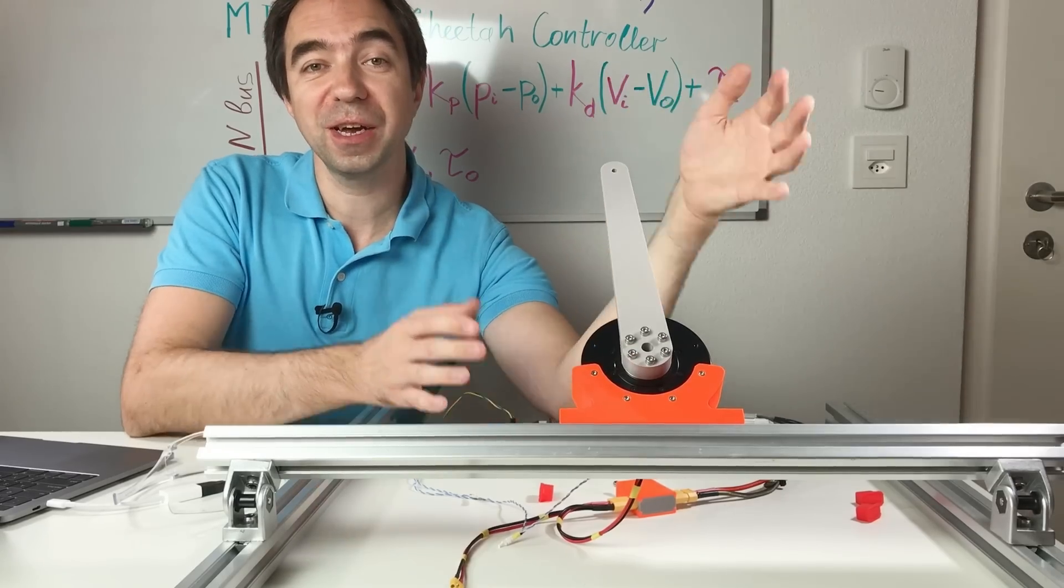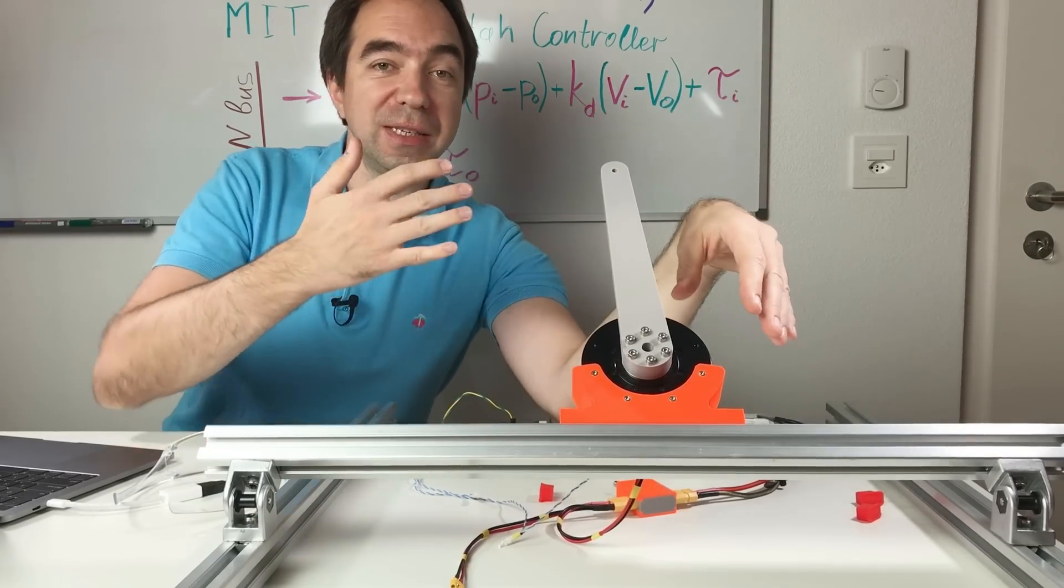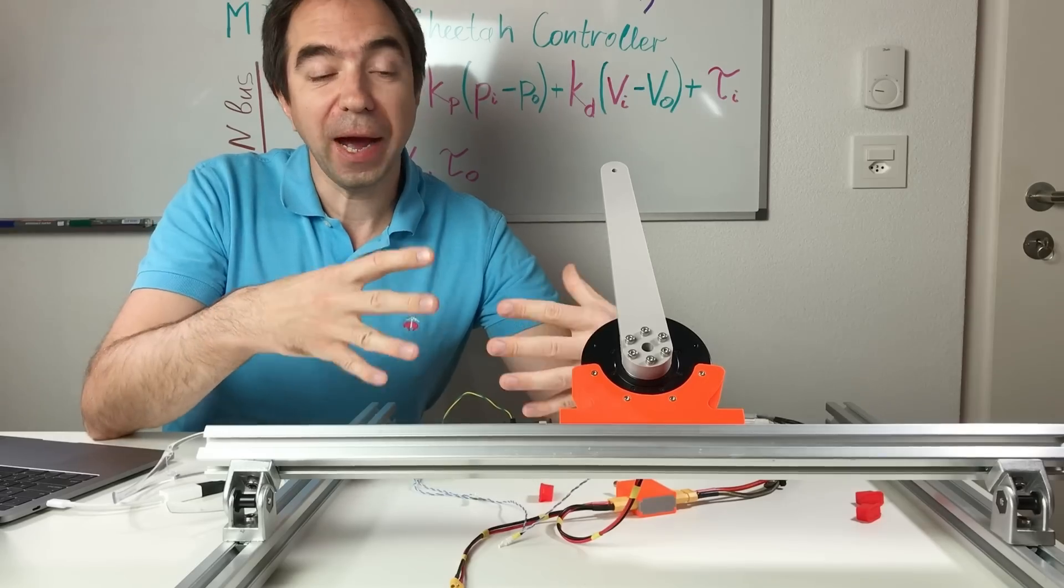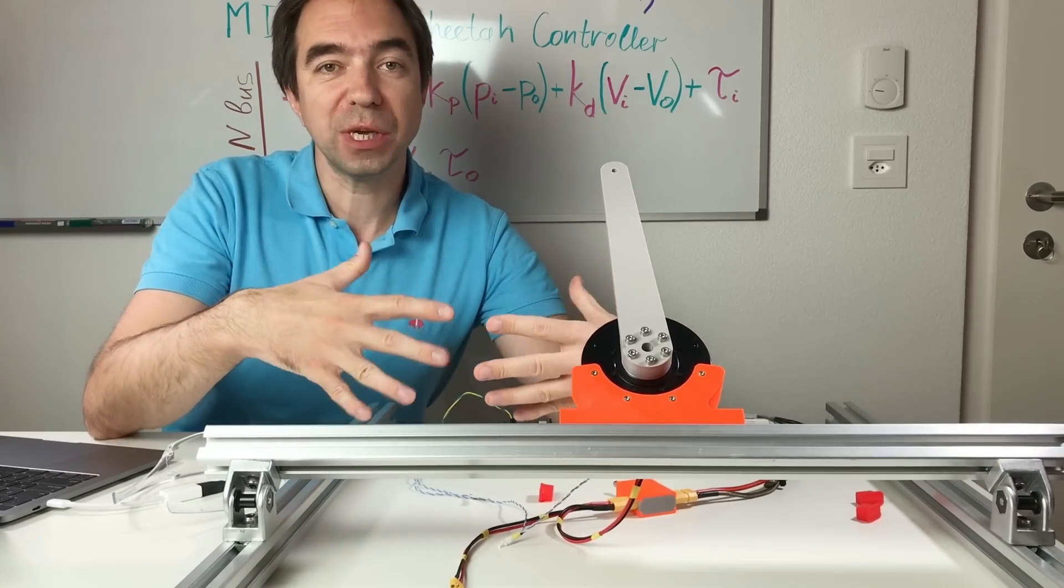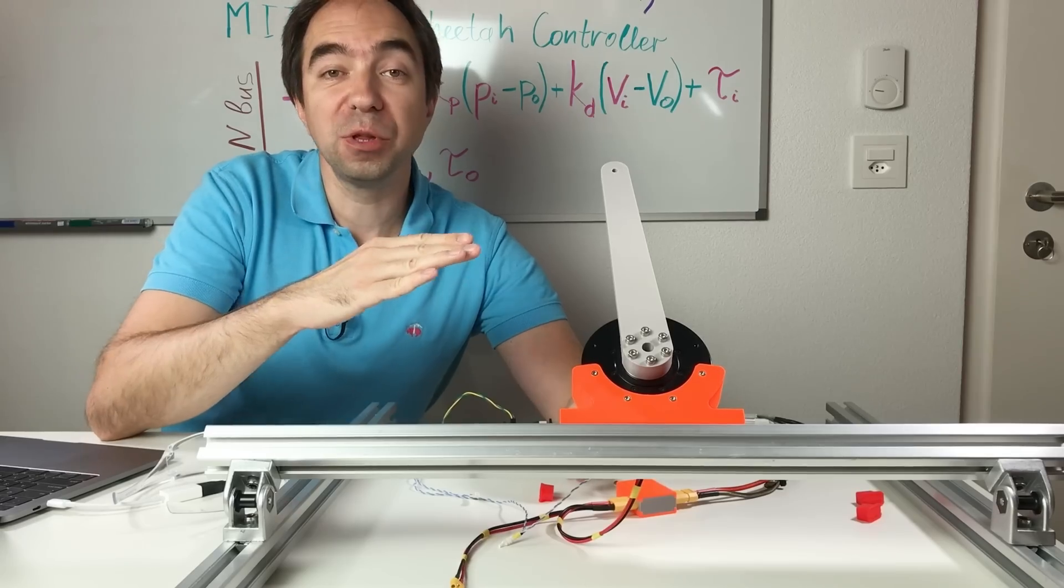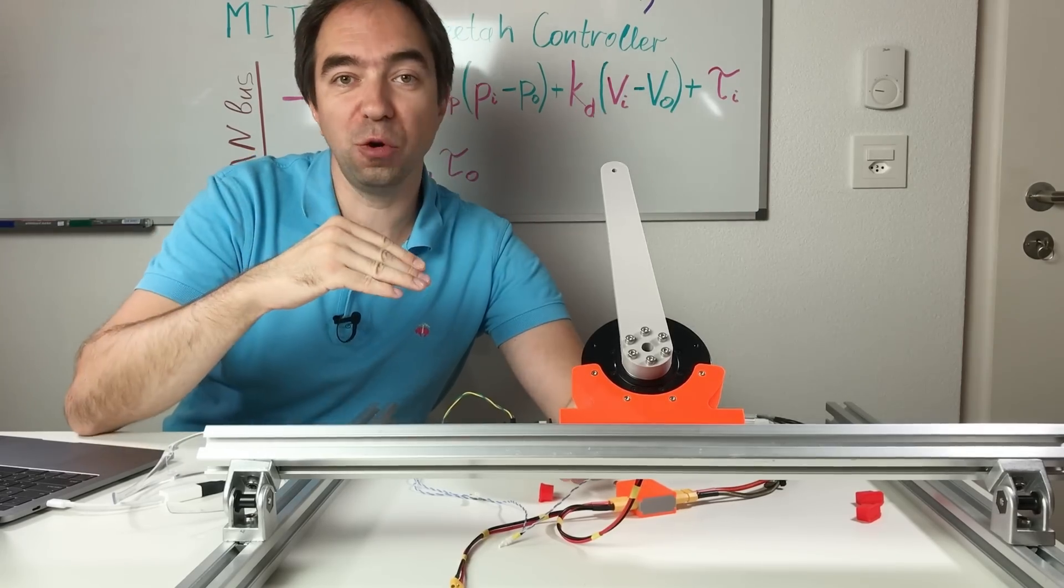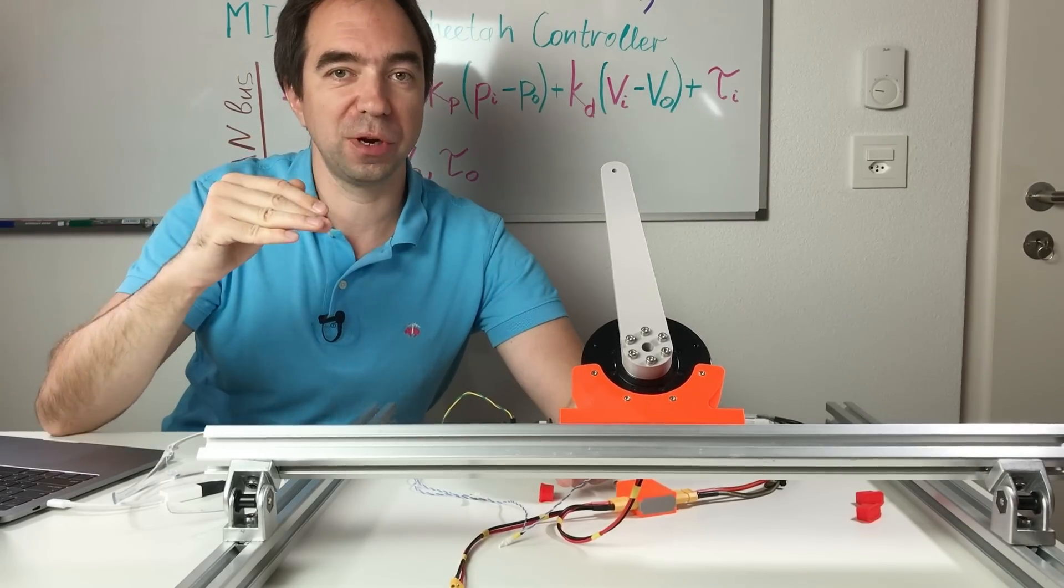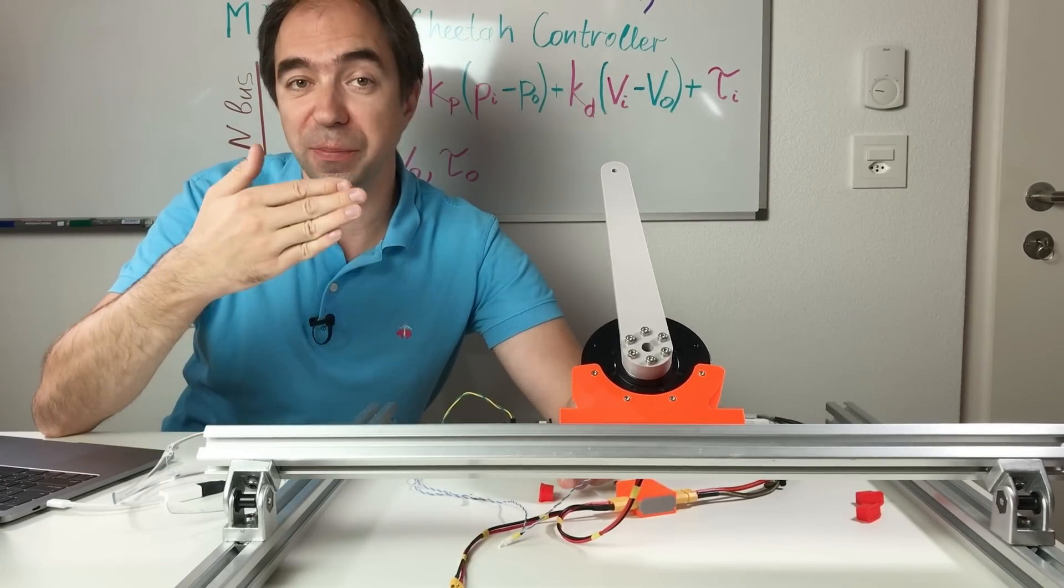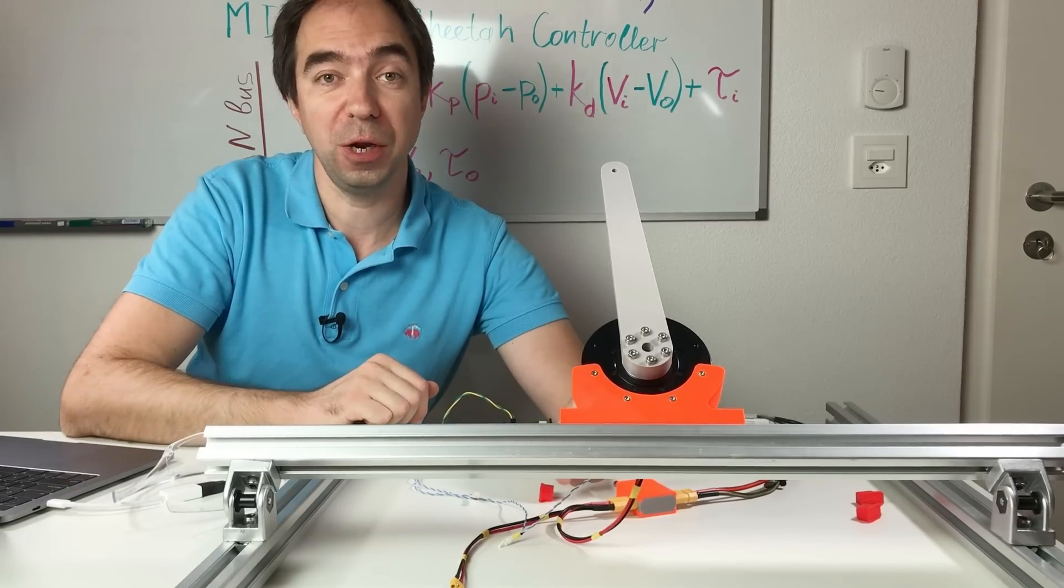As you can see it works kind of like in a collaborative robot where they detect the collisions. So here I added a super simple line, but you can do something more sophisticated. Like for example, you can look not on the absolute value of the torque, but on the step of the torque and detect the collisions like this. It's going to be way better than the collision detection just by absolute value.